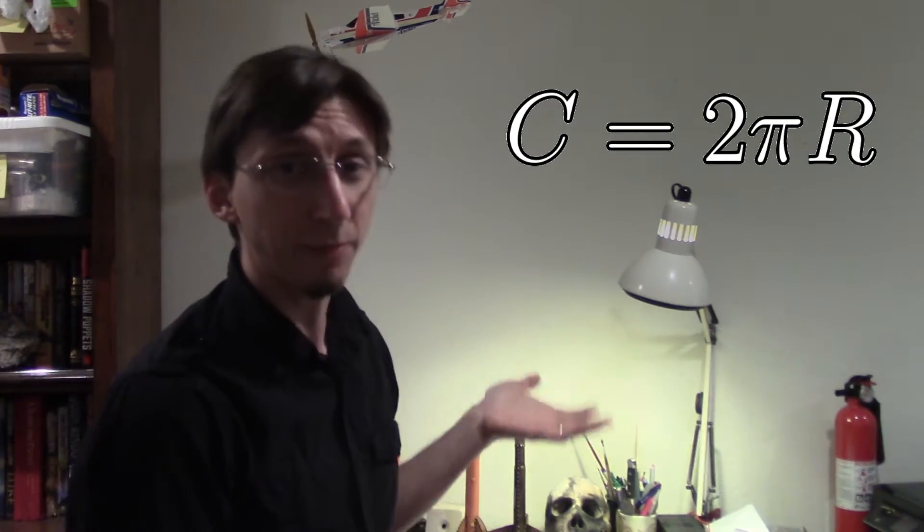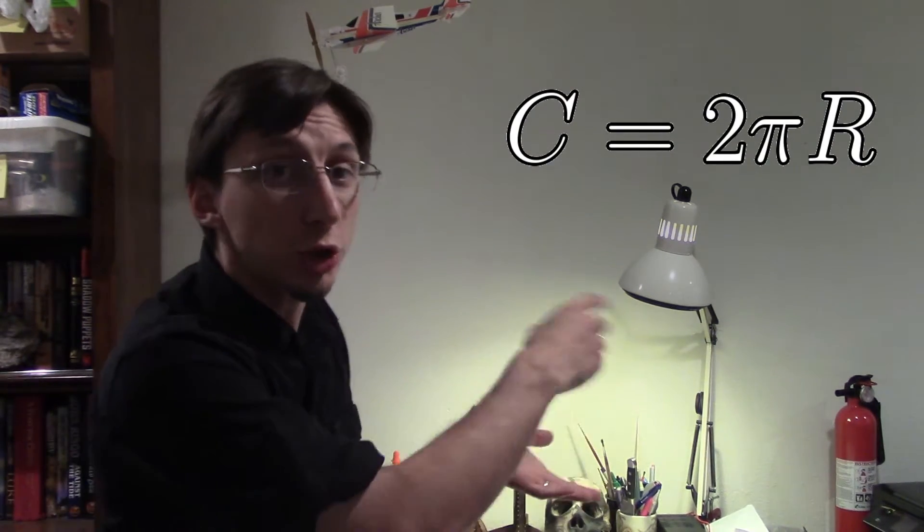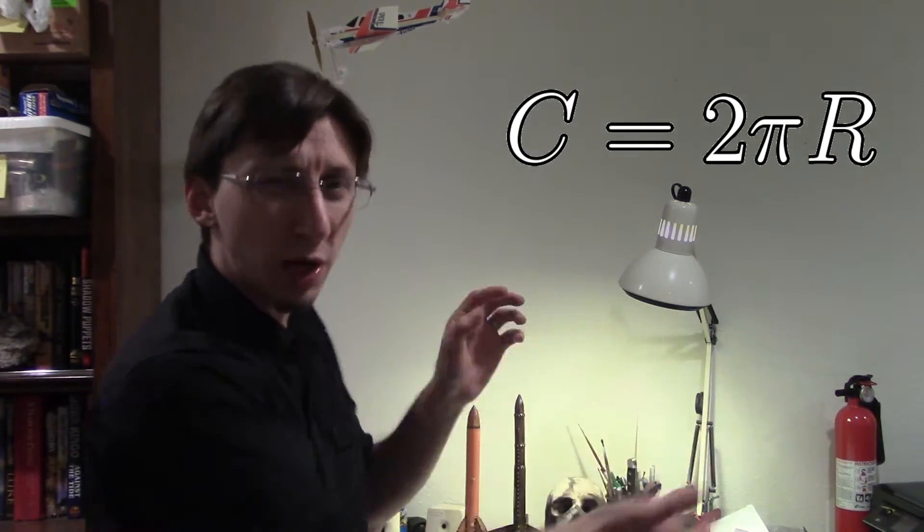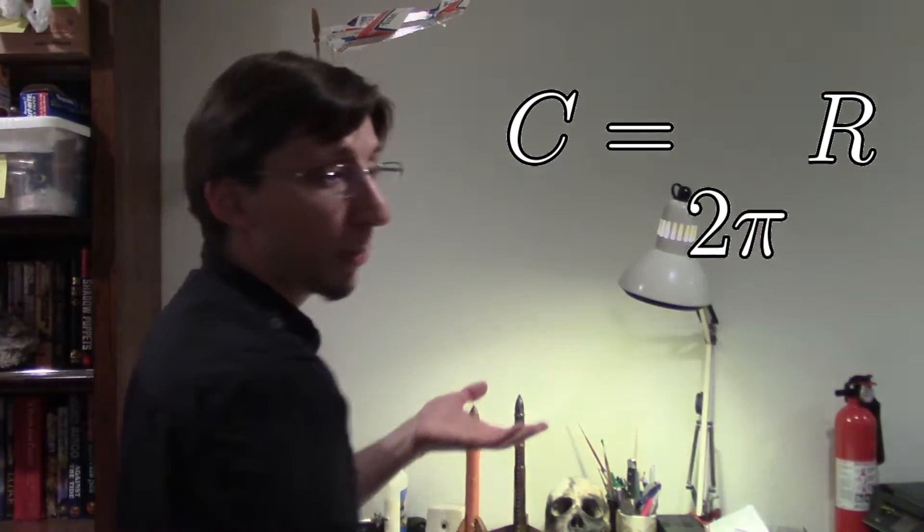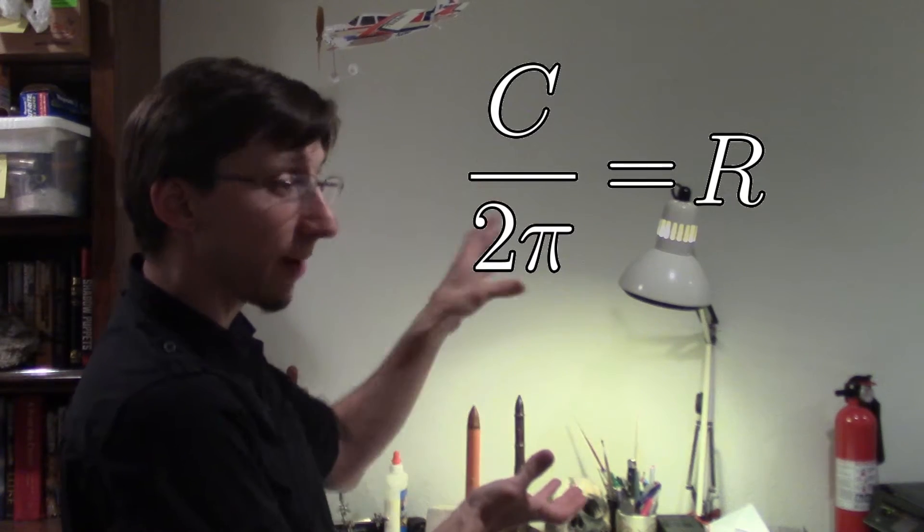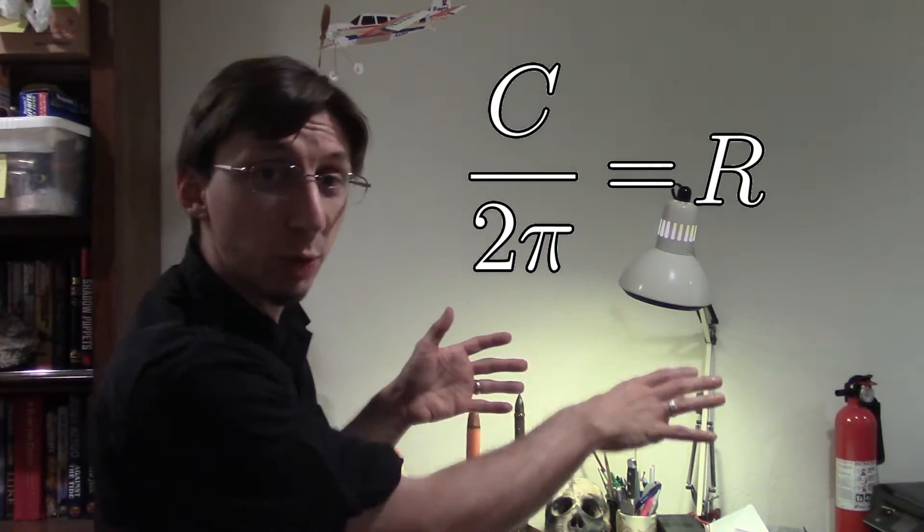Normally, it's written that the circumference, C, is equal to 2π times the radius. We're going to want to rearrange it slightly, but it's the same math. All you have to do is move the 2π over to this side, and you get the circumference divided by 2π is equal to the radius.